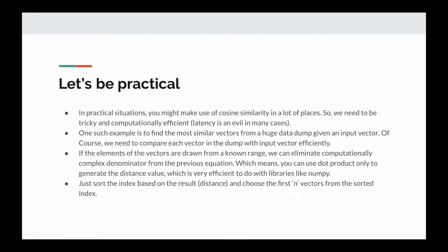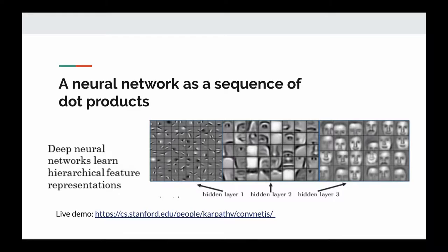In practical situations you might use cosine similarity in many places, and we need to be computationally efficient. One example is finding the most similar vectors from a huge data dump given an input vector — we need to compare each vector in the dump with the input vector efficiently. One thing we can do is get rid of the denominator term because division operations are costly. If we know that the elements of the vectors are drawn from a fixed range, we can just get rid of the denominator value. After searching for the vectors, sort the index based on the distance and choose the first n vectors from the sorted index.